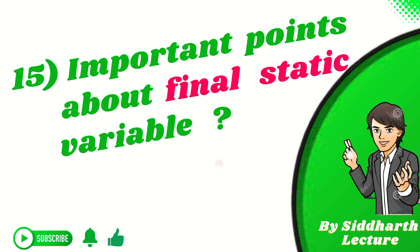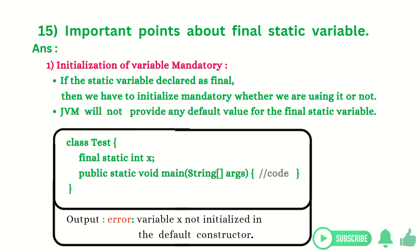Let's start. There are three points. First point is initialization of variable mandatory. If the static variable declared as final, then we have to initialize mandatory whether we are using it or not. JVM will not provide any default value for the final static variable.